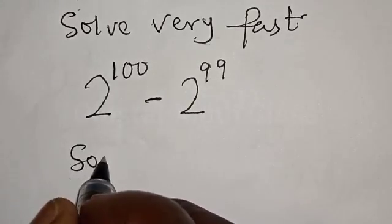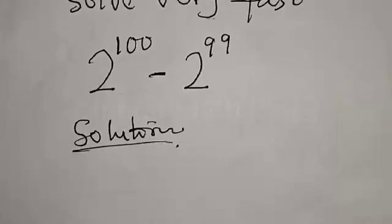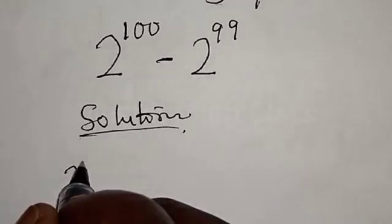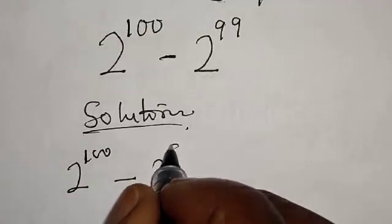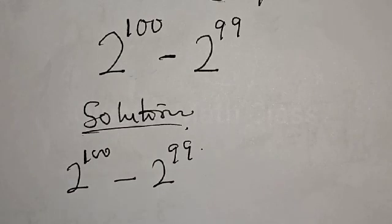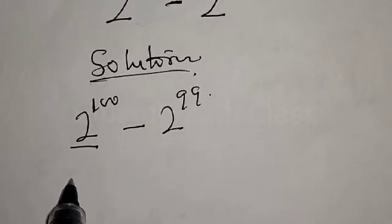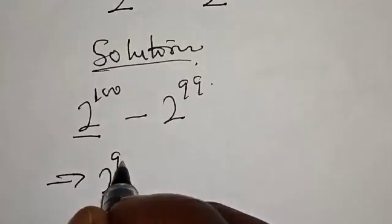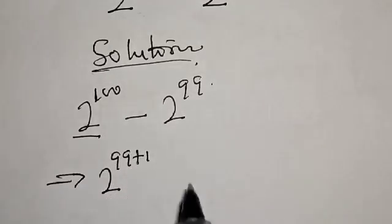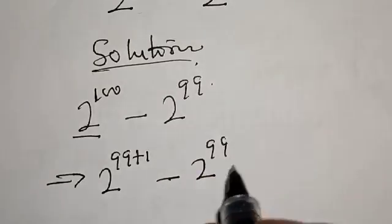Solution. We have 2 raised to power 100 minus 2 raised to power 99. We know that 100 minus 99 is equal to 1. Therefore, let's look at how we can manipulate this. This implies that 100 can be written as 99 plus 1, so we have 2 raised to power 99 plus 1, then minus 2 raised to power 99. We know that 99 plus 1 equals 100.